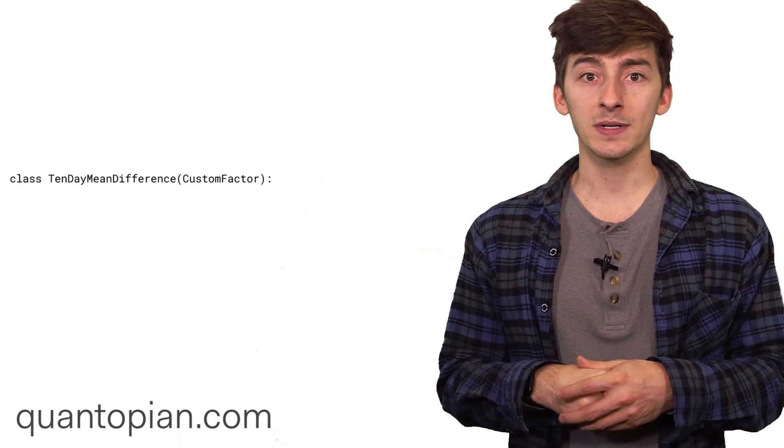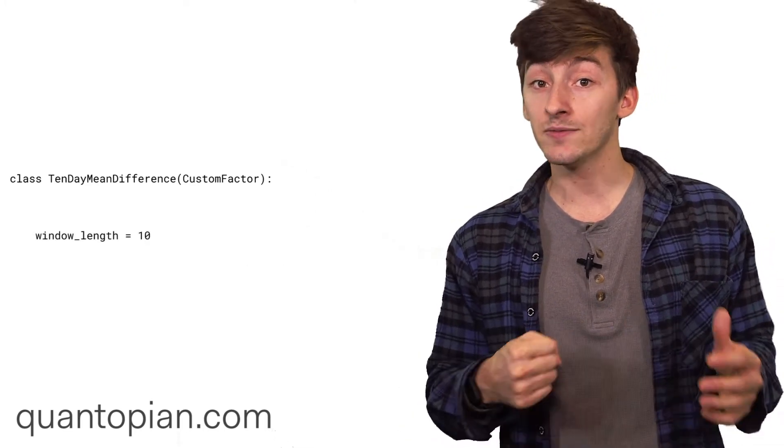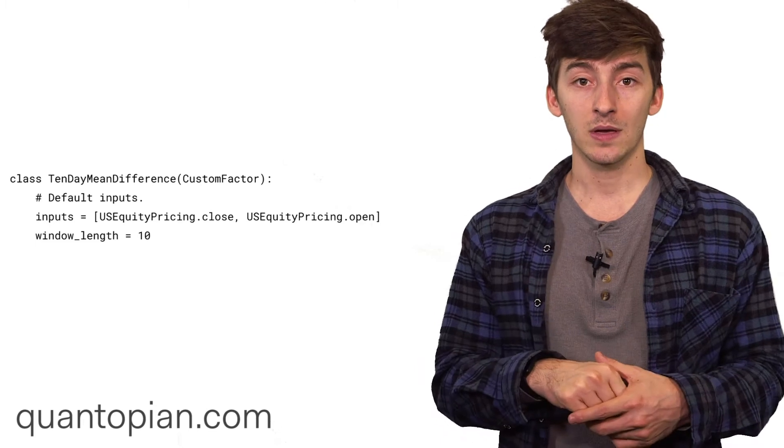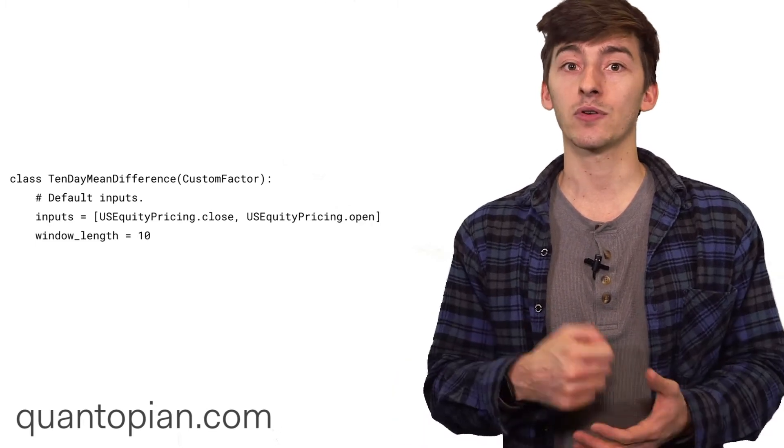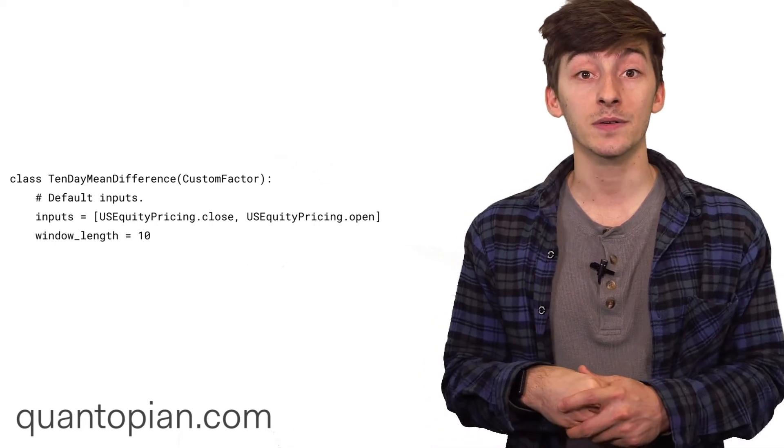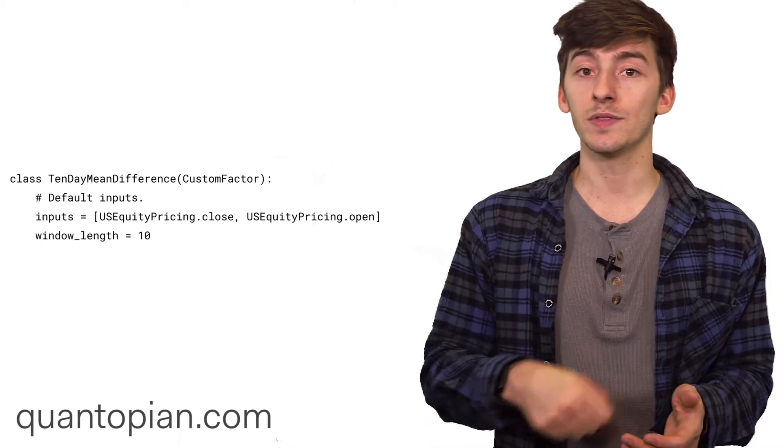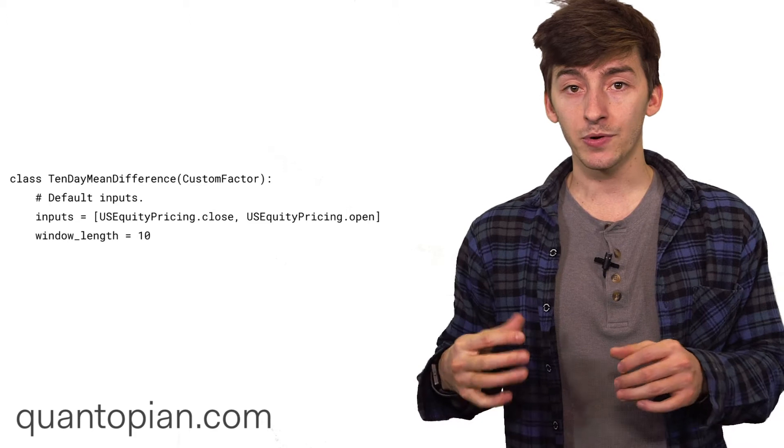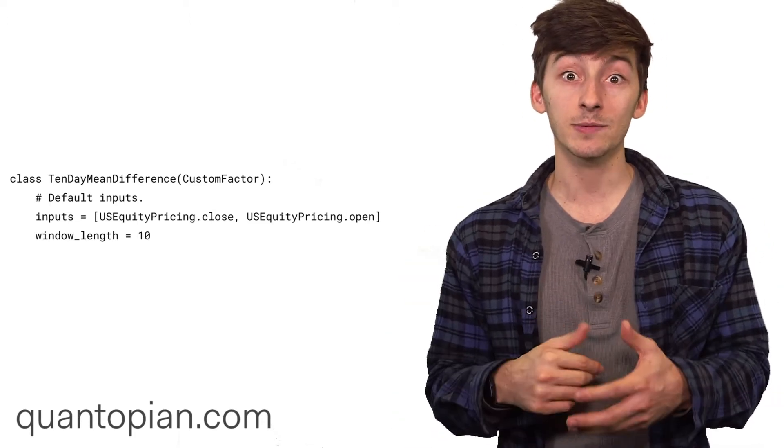To create a custom factor and define your own custom computation, what you need to do is create some value that extends the custom factor class. You're then going to add in the window length, the length of time that your factor needs data for, as well as the inputs, which is going to be a list of the different parameters that your factor looks at in order to create any sort of computation. When you run this through a pipeline, it's going to pull your inputs over the window length that you've specified.